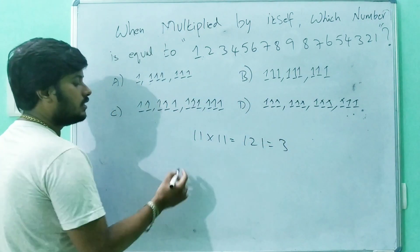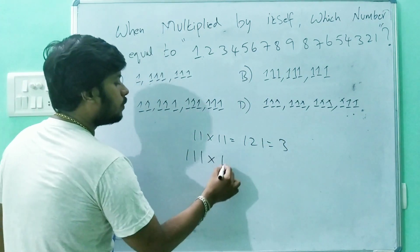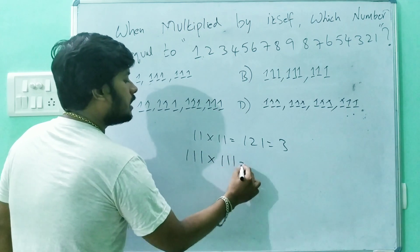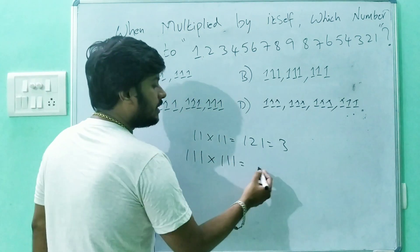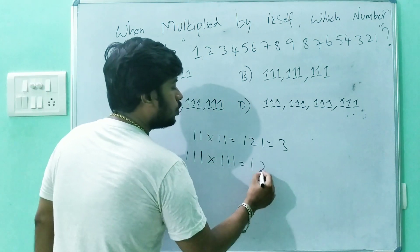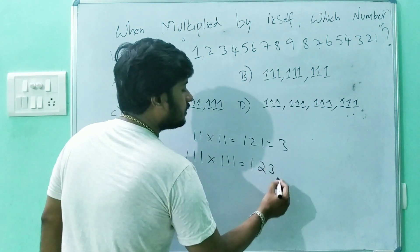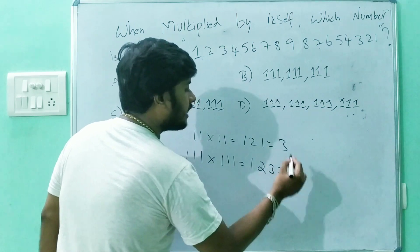Next: 111 into 111. If you multiply this, the result is 1, 2, 3, 2, 1 — that is, 12321. So three 1s multiplied by three 1s gives a 5-digit palindrome.